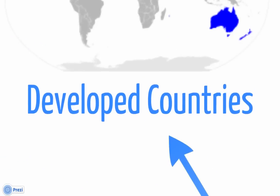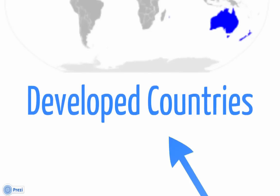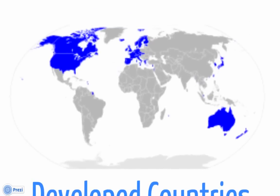First and foremost, you have developed countries. When you think of developed countries, think of an established economy, a government system, and they can offer items that can trade in the free world market. They have production. Developed regions would be the United States, Canada, Western Europe, Australia, and Japan.